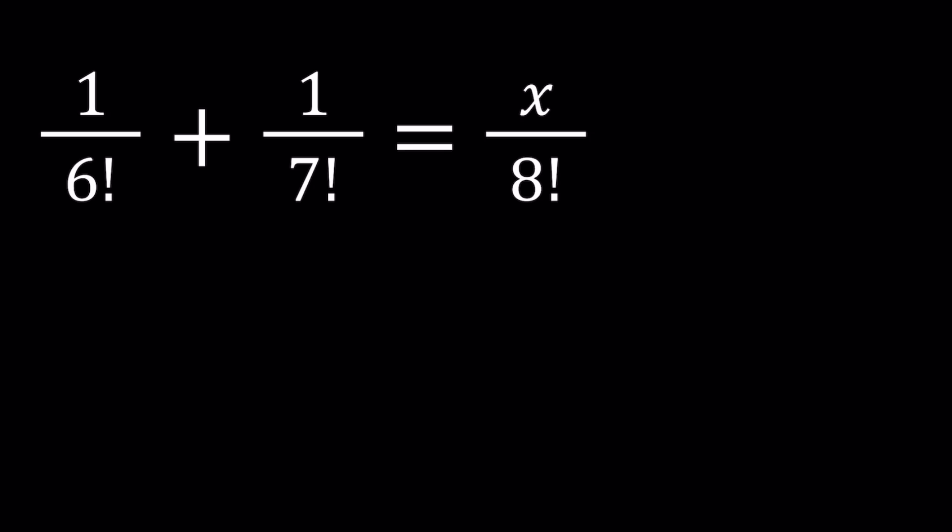For those of you who are not familiar with factorial, n factorial is defined as the product of numbers n through 1. So you multiply n consecutive integers including 1 and n, and that product is defined as n factorial.